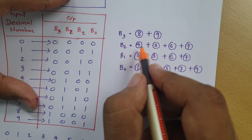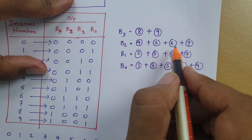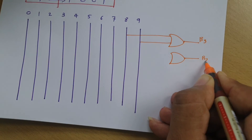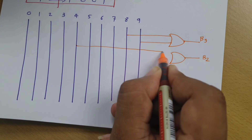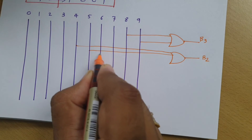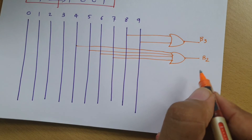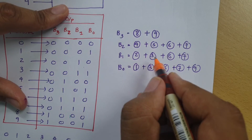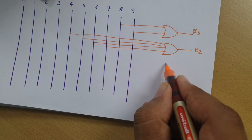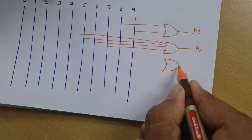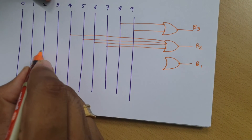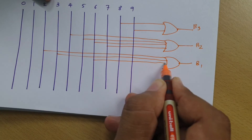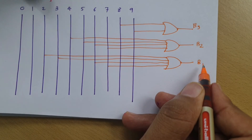For B2, it is 4 OR 5 OR 6 OR 7. So we connect terminals 4, 5, 6, and 7 to an OR gate to obtain B2. For B1, it is 2 OR 3 OR 6 OR 7, so we connect those four terminals through an OR gate to get B1.